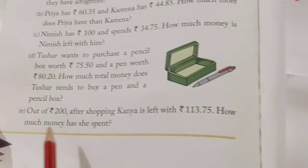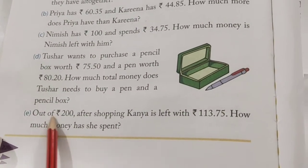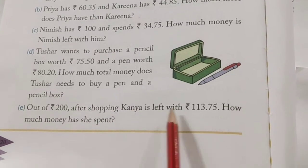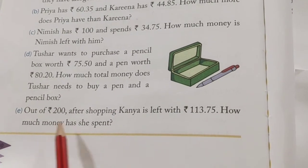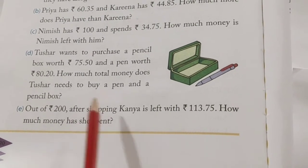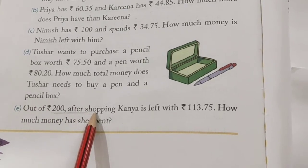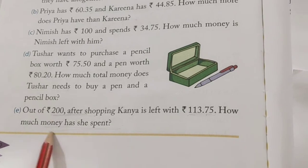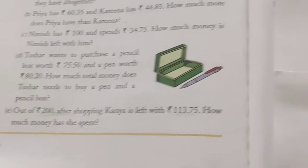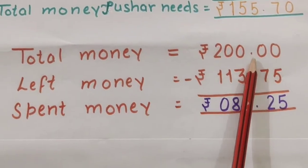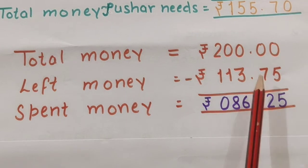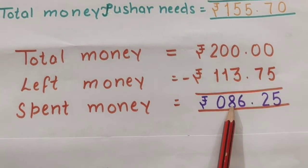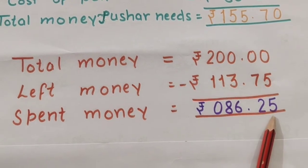Next, very simple statement again. Out of rupees 200, after shopping, Kanya is left with rupees this much. So, how much money has she spent? She had 200 rupees. After shopping, this much money is left — so how much was the spent money? We have total money rupees 200, left money is this much. So, we will subtract left from total to get the amount of spent money.